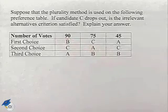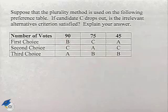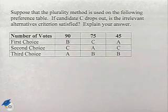Now we're going to consider another preference table. Suppose that the plurality method is used on the following preference table. If candidate C drops out, is the irrelevant alternatives criterion satisfied? Explain your answer.